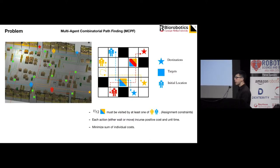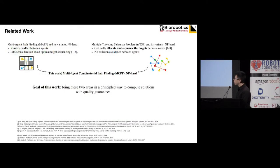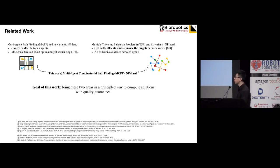We formulate the following graph search problem called Multi-Agent Combinatorial Pathfinding. The goal is to plan collision-free paths from start to goals while visiting intermediate targets. We also consider assignment constraints: a target must be visited by at least one eligible or capable agent. We want to minimize the sum of individual path costs. There are two related areas: multi-agent pathfinding resolves conflicts between agents but often ignores optimal target sequencing; multiple Traveling Salesman Problem can allocate and sequence targets but doesn't consider collision avoidance. This work brings them together in a principled way.